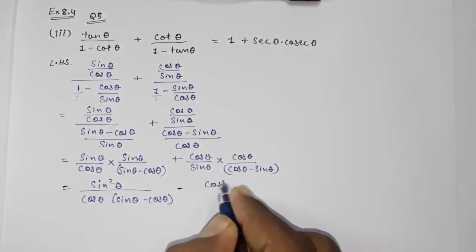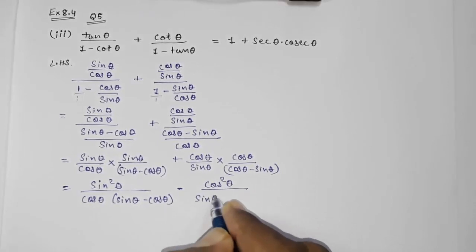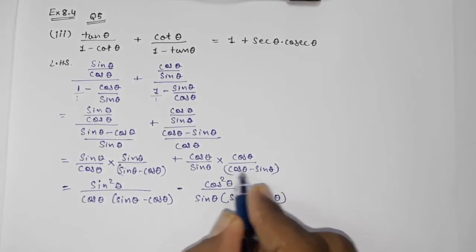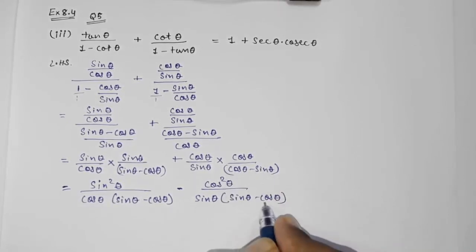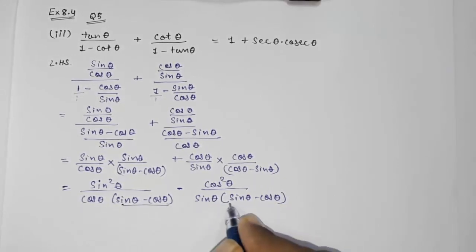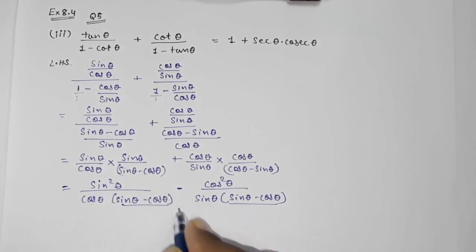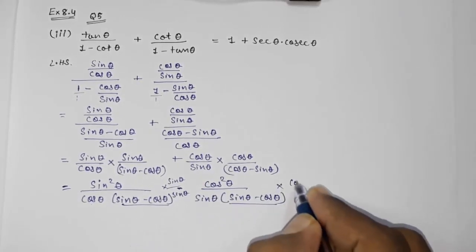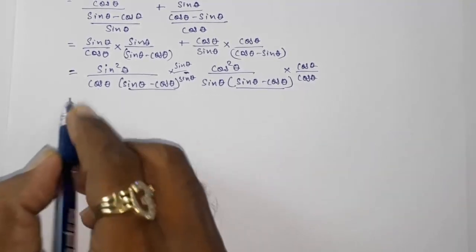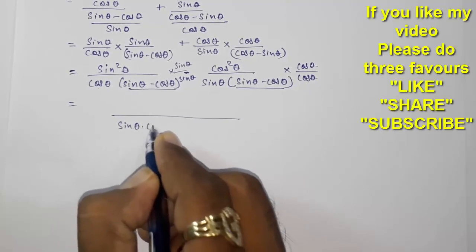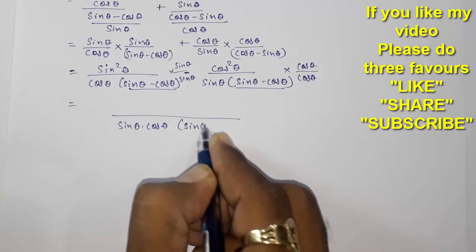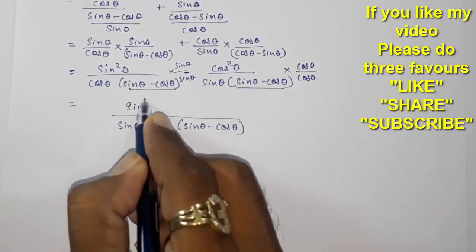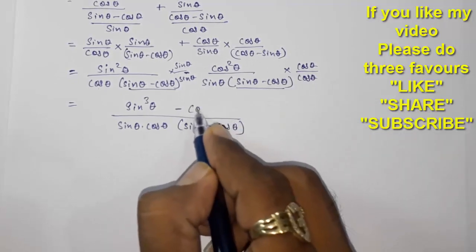I had taken minus common, so the sign changed: the plus became minus and the minus became plus. Now both denominators are the same: sin θ minus cos θ. The only difference is one has cos θ and the other has sin θ in the outer denominator. Finding the LCM by multiplying the first term by sin θ over sin θ and the second by cos θ over cos θ, the common denominator becomes sin θ into cos θ into bracket sin θ minus cos θ. The numerator becomes sin³ θ minus cos³ θ.